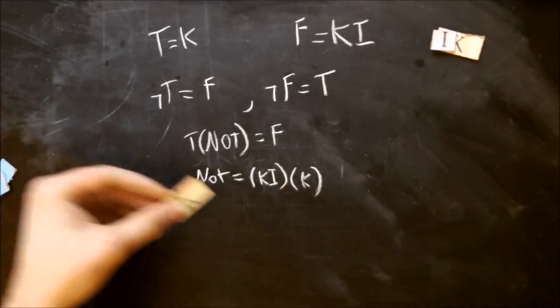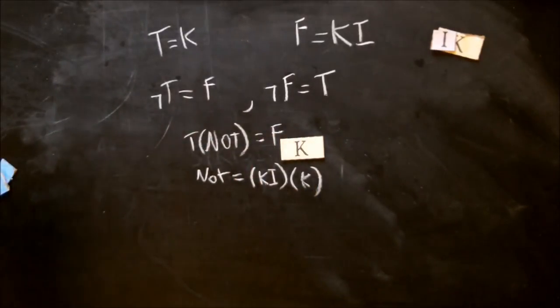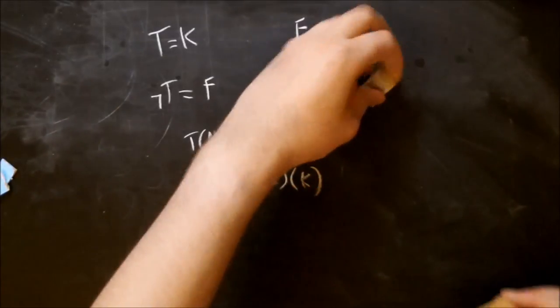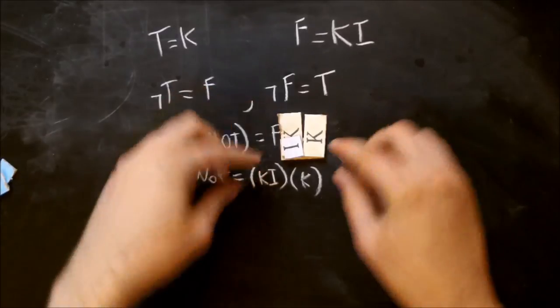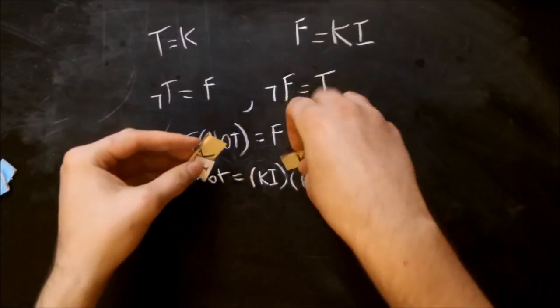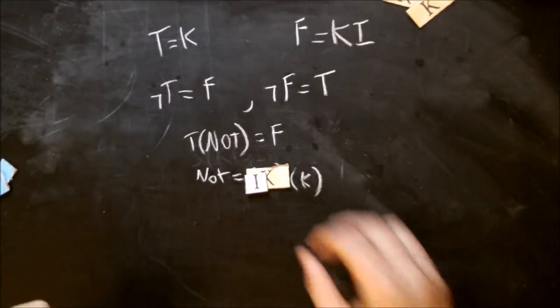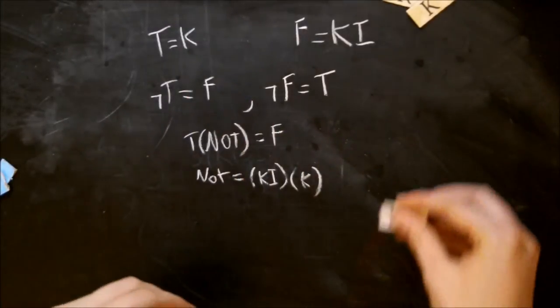So that means if I want to negate true, which is k here, I make up a ki and a k, and I apply them both, and that k is finished now, so I only take the first one. So I'm left with just ki, which is false. Cool. So that's why that just answered my own question.